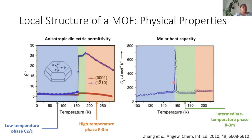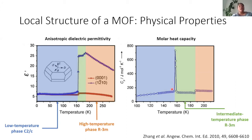Let's look at this MOF. This graph shows two pictures: the anisotropic dielectric permittivity of a MOF between 0 K and room temperature, and the molar heat capacity between 100 and 210 K. Just looking at these two graphs, we can see that something interesting is happening around 158 K, and something else at 187 K. We have a peak in permittivity and heat capacity at 158 K, and a smaller feature at 187 K. I'm proposing three different phases: a low temperature phase, a high temperature phase, and an intermediate temperature phase.